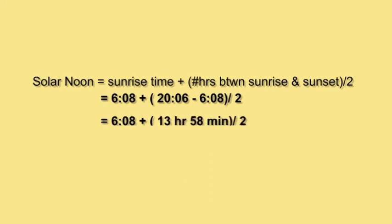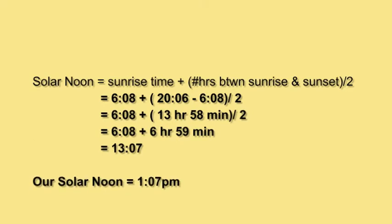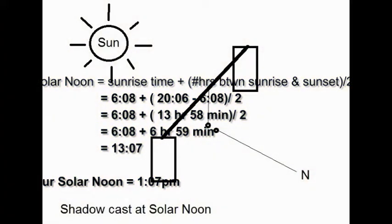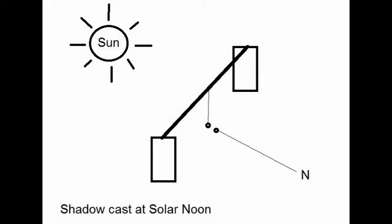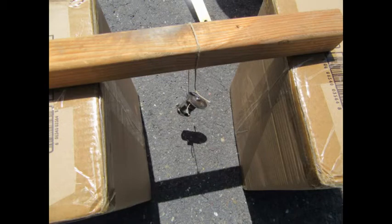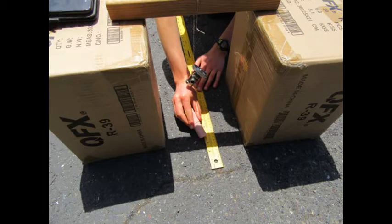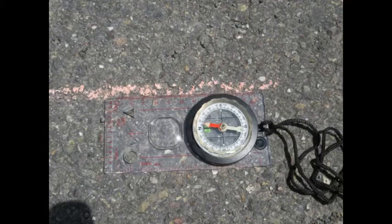At our location, on the date we made our sundial, the sunrise time was 6:08 AM and the sunset time was 8:06 PM. We found that our solar noon was at 1:07 PM. Hint: using 24-hour time can help calculate solar noon. To cast a shadow at exactly solar noon, you will need to tie a string around a rock or other weight and tie the other end of the string on a broom handle or board supported by two objects of the same height, such as chairs or boxes. This setup allows the shadow to be at a 90-degree angle perpendicular to the Earth's surface. At exactly solar noon for your location, trace the shadow with chalk. The end of the shadow closest to the weight points toward true south and the other end points toward true north.